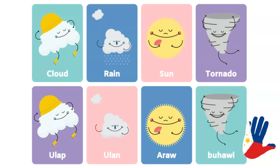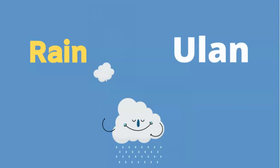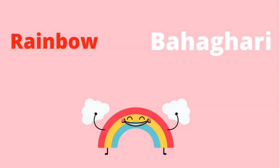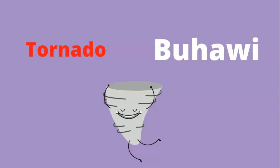The first one is Rain — Ulan. Cloud — Ulap. Rainbow — Bahaghari. Tornado — Buhawi.